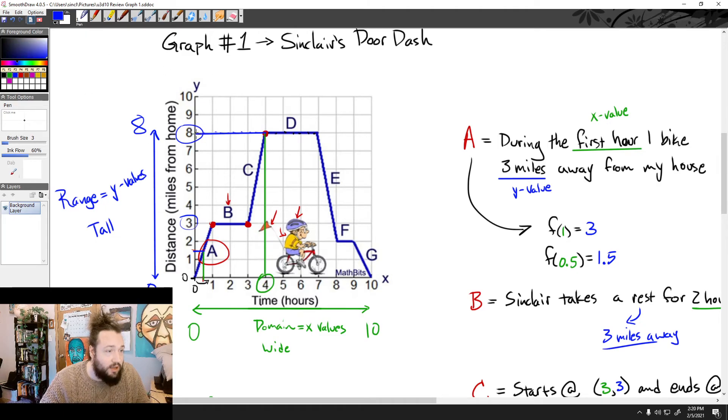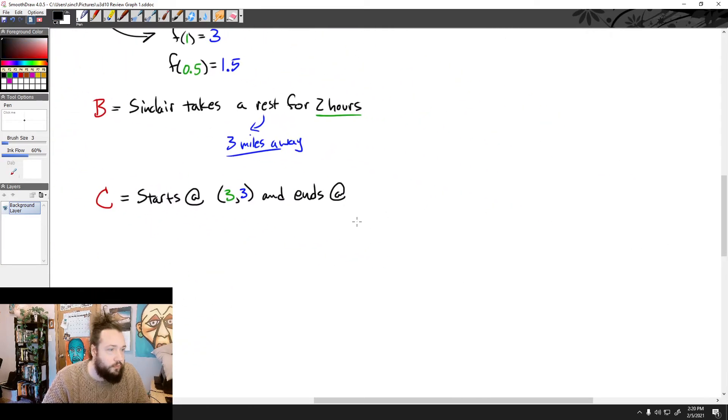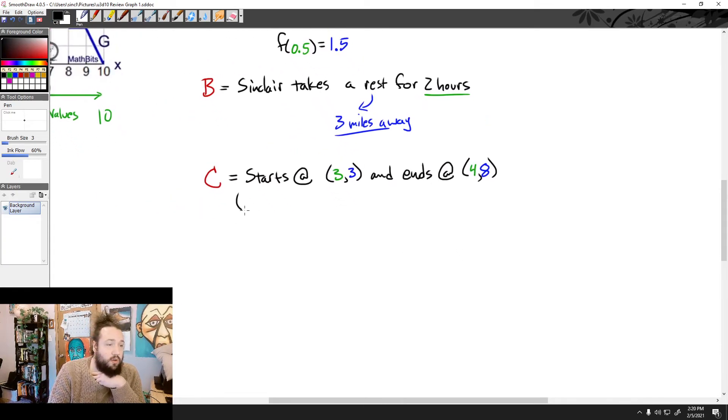And then where does it end? It ends here at 4 and at 8. Ooh. So I actually achieved my highest distance, my farthest distance from home here. So I would say, let's see, it ends at 4. So I'd say 4, 8. Now, this means I biked. Okay? So we could say Sinclair takes 1 hour from 3 to 4. So that would be 1 hour to bike. And let's see how far did I bike. I went from 3 miles away to 8 miles away. So that would be to bike 5 miles.